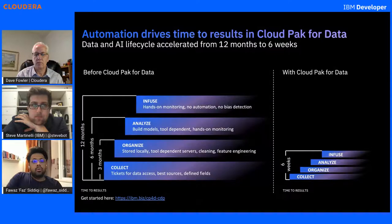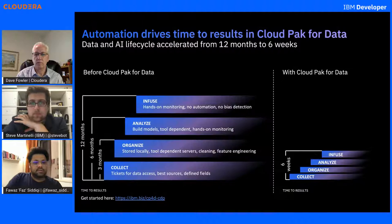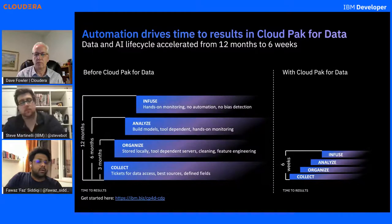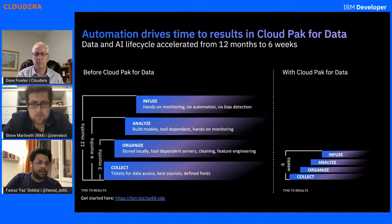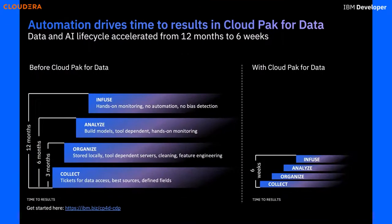Now let's talk about modernize. Once you've deployed all of these four steps, it's time to modernize — to ensure that you are growing rather than just staying there. You need to ensure that you start unlocking major value in the solution you've deployed, unlocking the value of data for AI in a hybrid multi-cloud world. When you look at all four steps — collect, organize, analyze, and infuse — it can take about 12 months, and at times we've seen cases of more than one and a half years. With automation, it basically drives time to results in around six weeks.